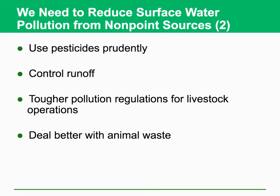We have to reduce the amount of pesticides used in agricultural activities and control runoff of stormwater and rainwater, because the main pathway of pollutant transport from non-point sources to water bodies is rainwater runoff. By controlling that, we can significantly cut off incoming pollutants. We need to have tougher pollution regulations for livestock operations, because this is one of the main sources of non-point source pollution, and we have to deal better with animal waste. Animal waste contains very high concentrations of organics, nitrate, and phosphate, and once we have these pollutants in the water, we have a very big problem.